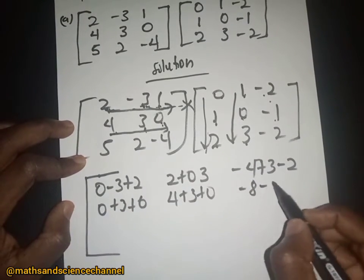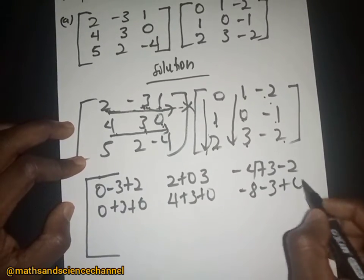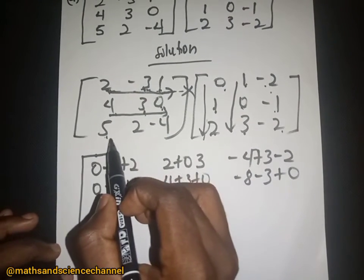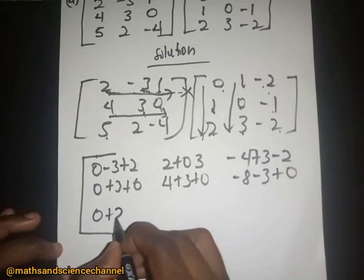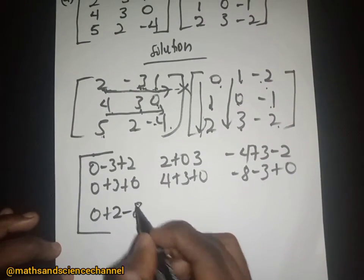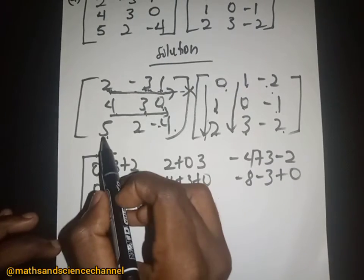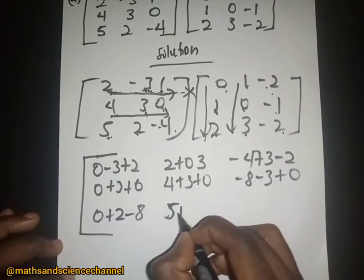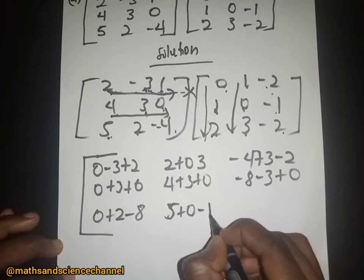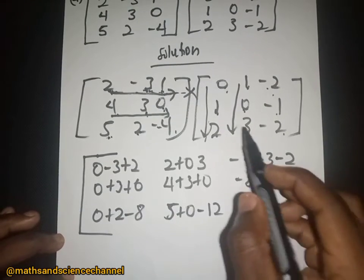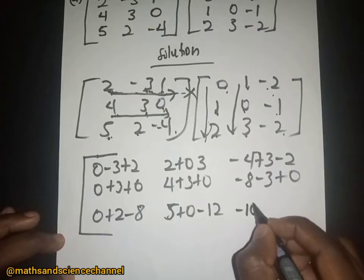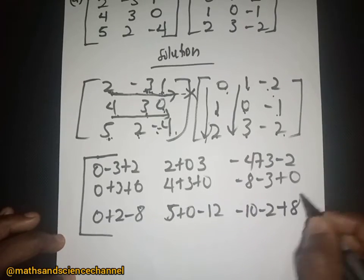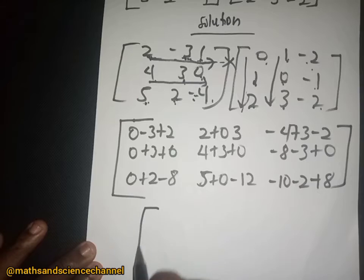Then 4 multiplied by negative 2 is negative 8; 3 multiplied by that is negative 1; 0 multiplied by that is 0. For the next row: 5 multiplied by 0 is 0; 2 multiplied by 1 is 2; negative 4 multiplied by that is negative 8. Then 5 multiplied by that is 5; 2 multiplied by 0 is 0; negative 4 multiplied by that is negative 12. Finally: 5 multiplied by negative 2 is negative 10; 2 multiplied by that is negative 2; negative 4 multiplied by negative 2 is positive 8.